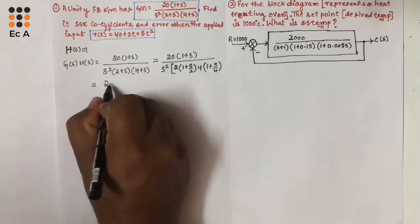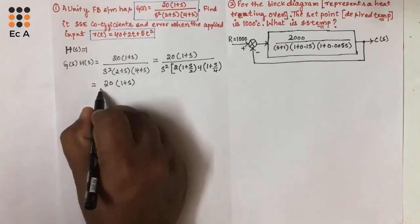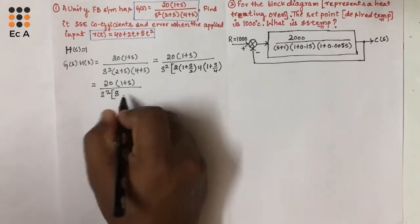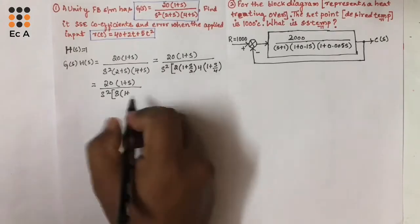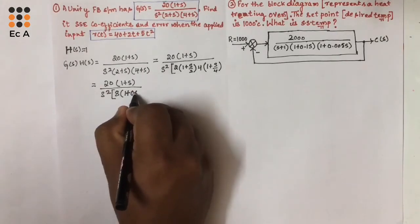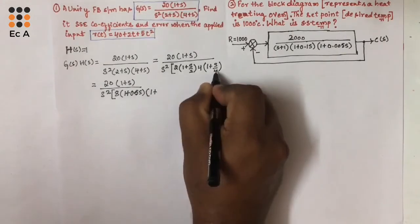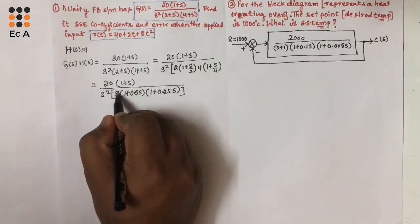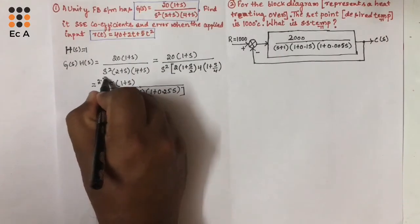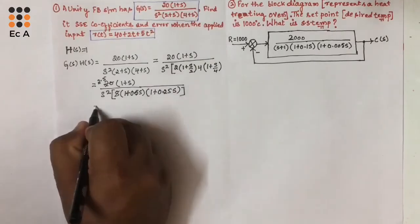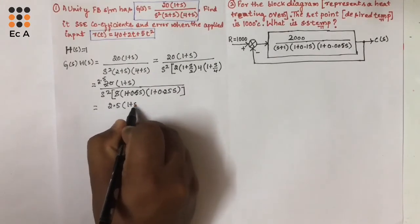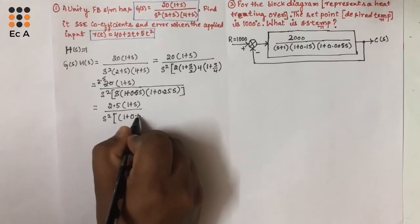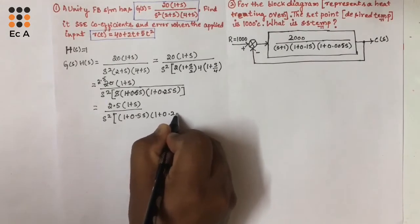Now we can write this as 20 times (1 plus S) divided by S squared times 2 times 4, which is 8, times (1 plus 0.5S) times (1 plus 0.25S). Cancelling 8 and 20 gives a factor of 2.5, so the equation becomes 2.5 times (1 plus S) divided by S squared times (1 plus 0.5S) times (1 plus 0.25S).